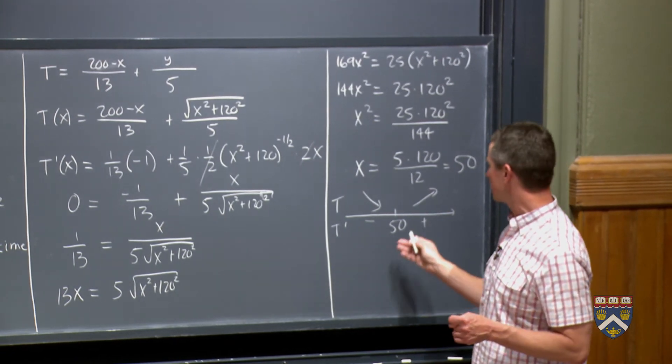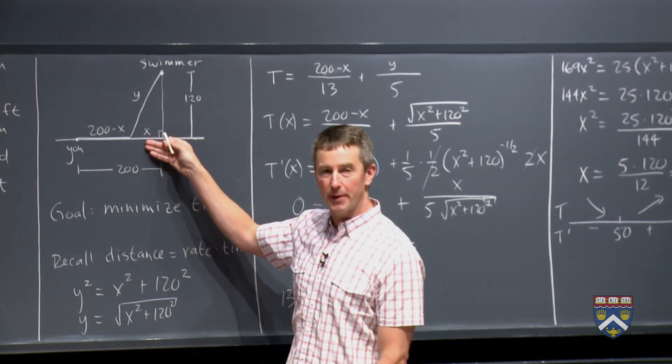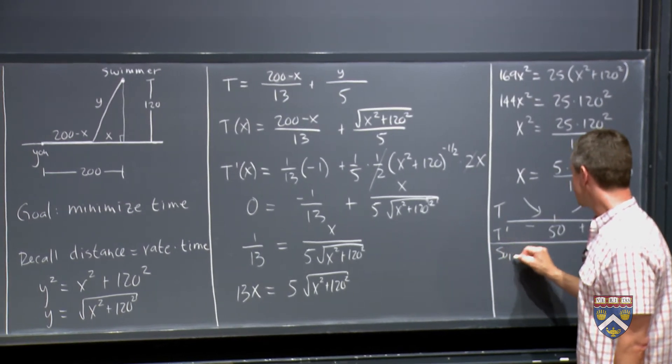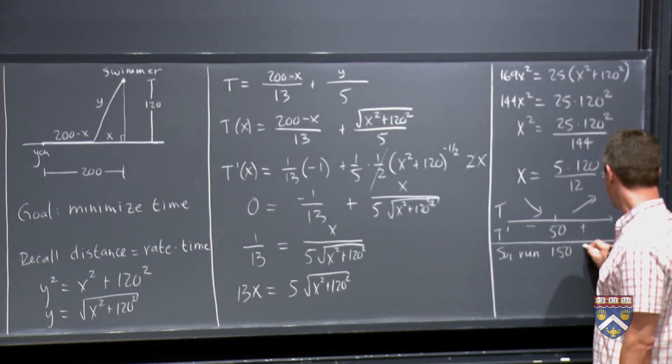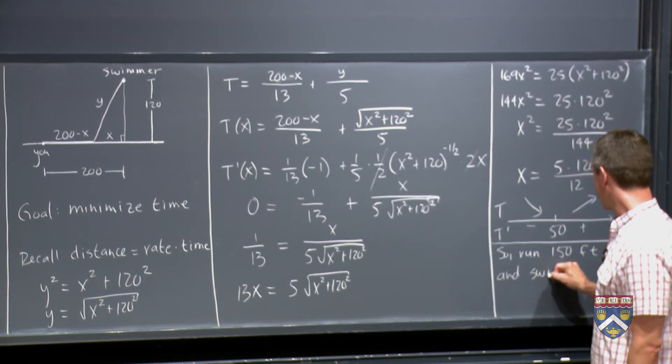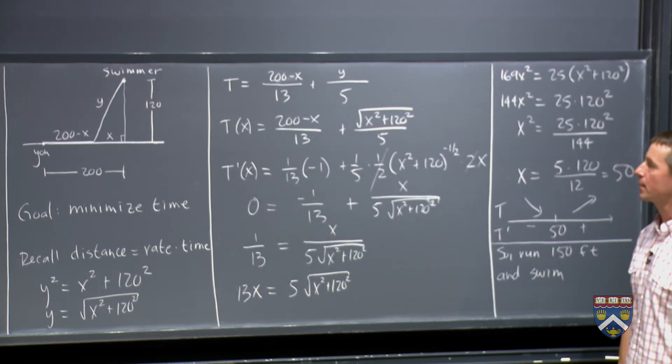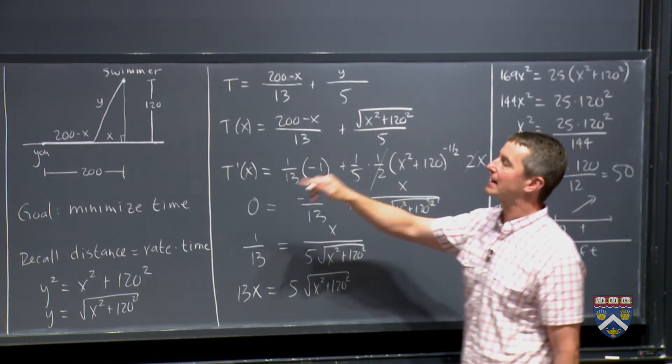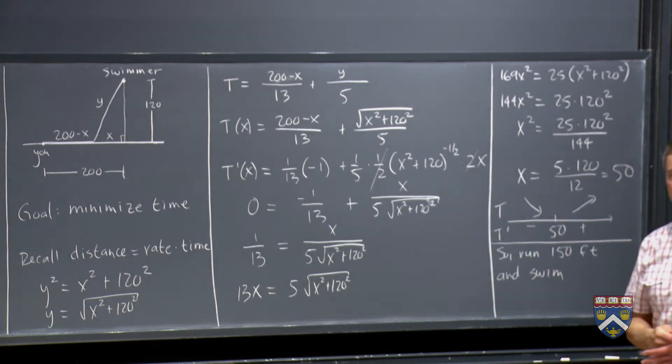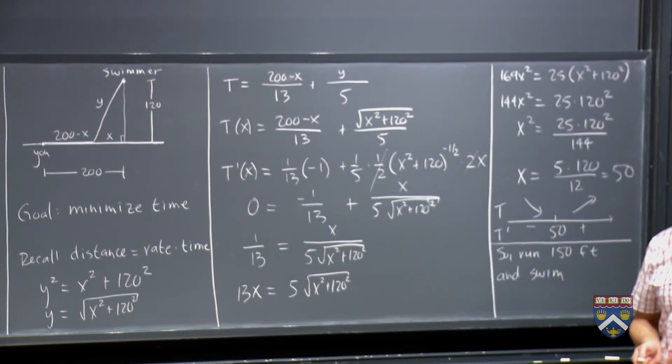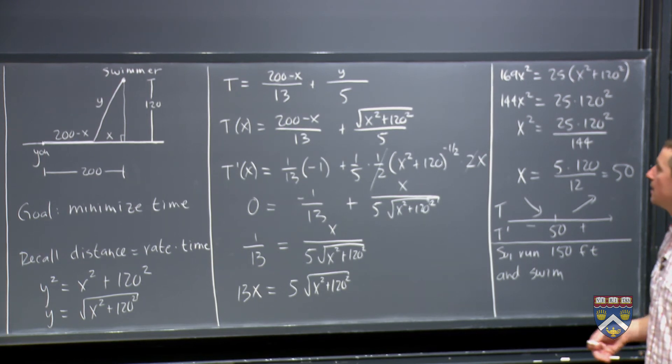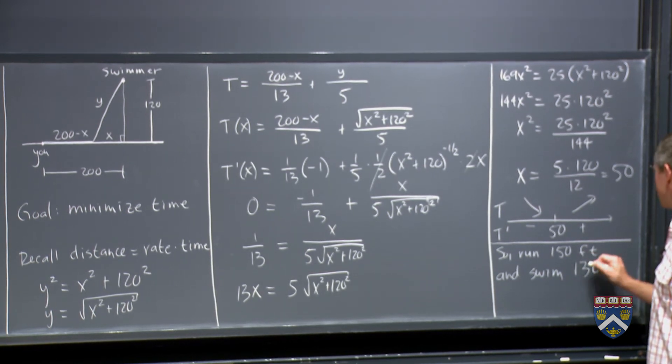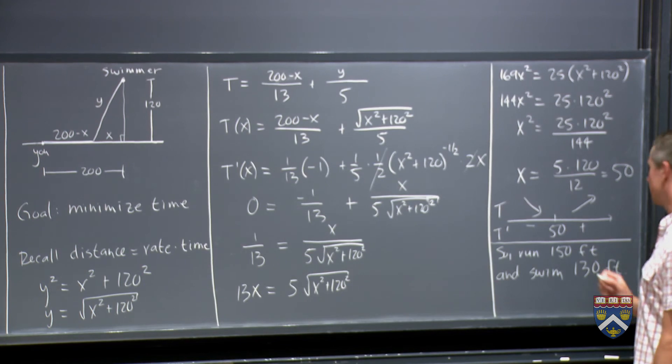So what does this tell us? What is the path that we're supposed to do? X is this distance in the picture. So we are supposed to run 200 minus x. So our path is to run 150 feet and then start swimming. And if we can actually figure out how far we're going to swim, x is 50 in our swimming distance. So if you take 50 squared plus 120 squared, you get 130 squared. This is one of these nice Pythagorean triplets like 3, 4, 5. This is a 5, 12, 13 triangle. So run 150 feet and then swim 130 feet.